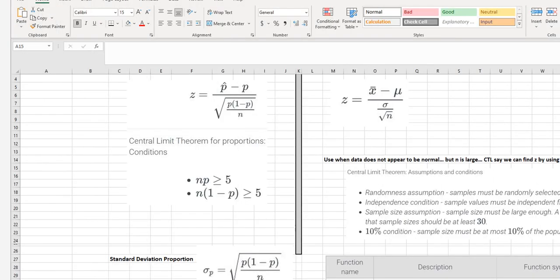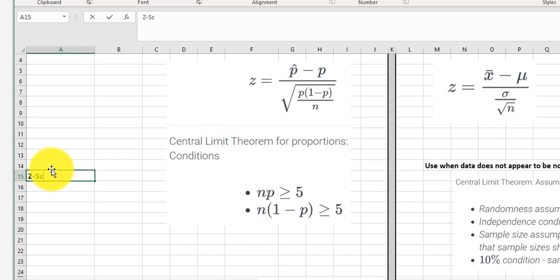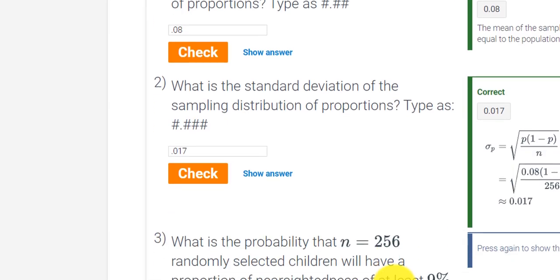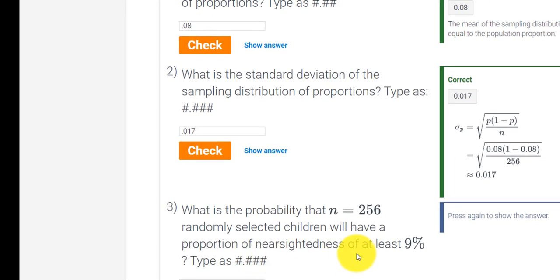All right, so I'm going to type this in here. Z-score was 0.588, right, and now we want the probability, right, that the value is greater than. The proportion of nearsightedness is at least 9% or greater.